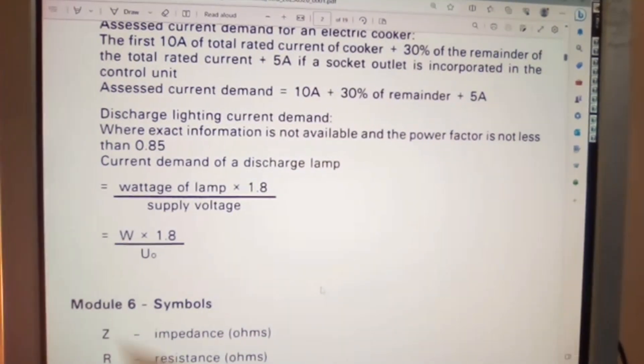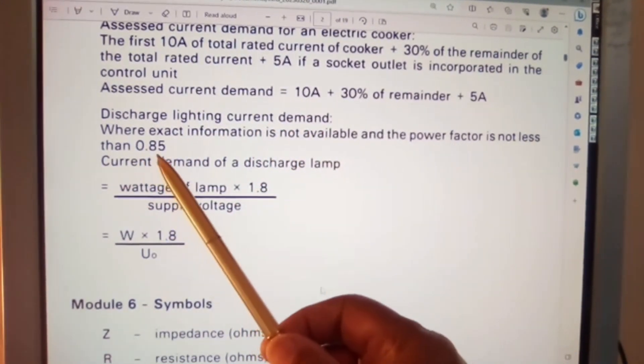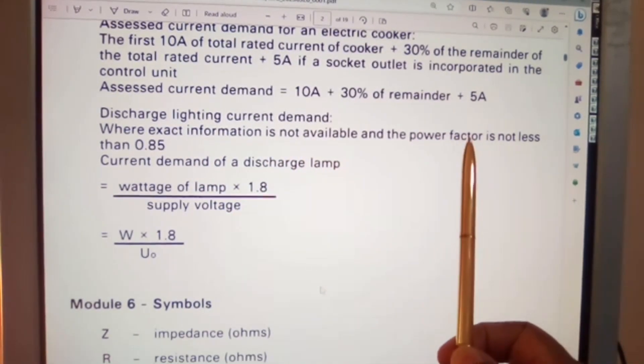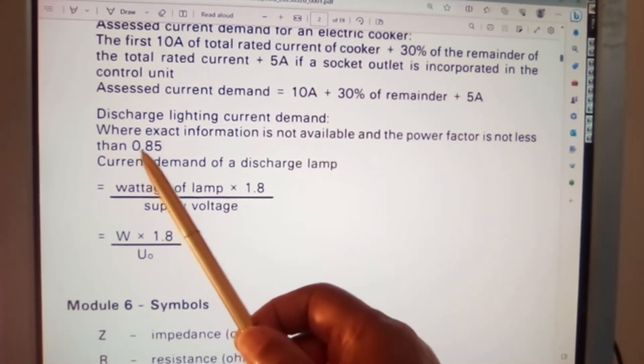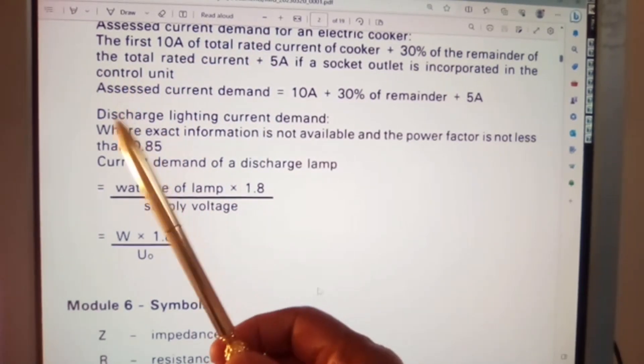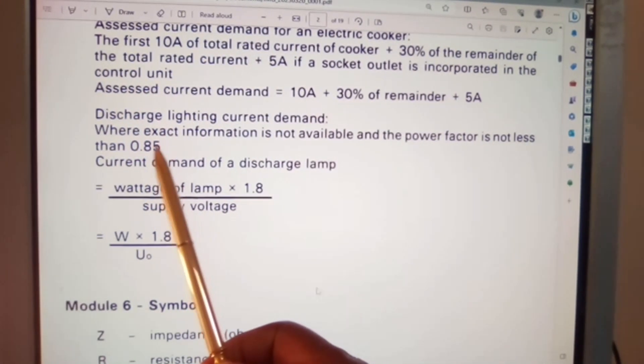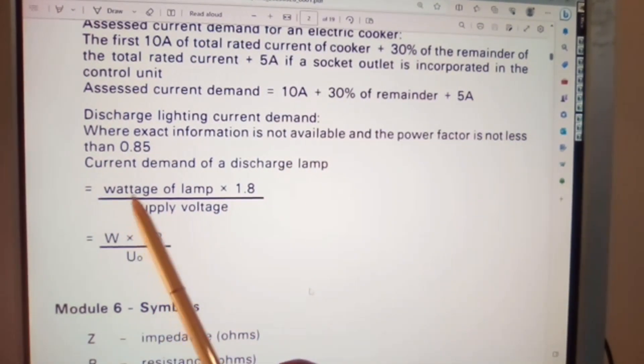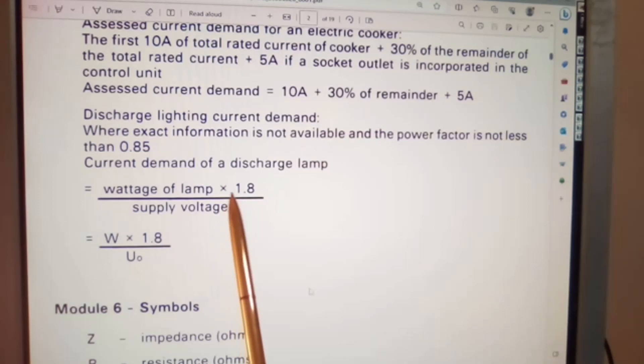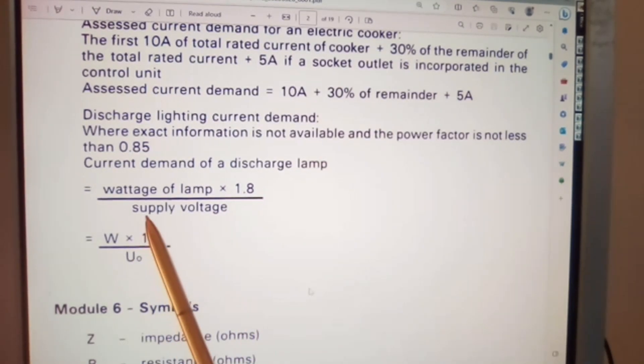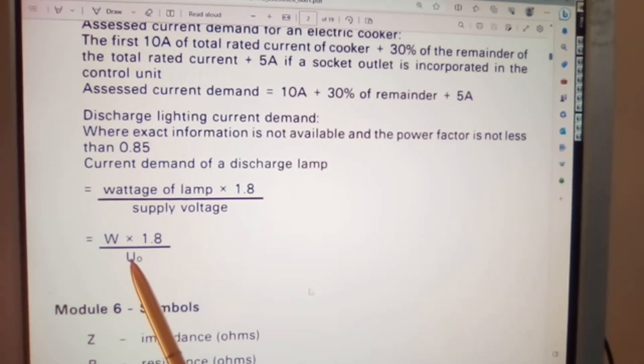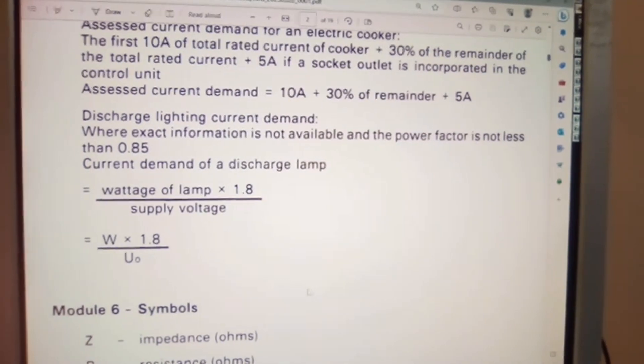Now discharge lighting current demand. Where exact information is not available and the power factor is not less than 0.85, be aware of any changes to this value here. Current demand of a discharge lamp equal voltage of lamps times 1.8 factor over supply voltage. W times 1.8 over voltage, supply voltage.